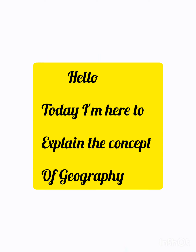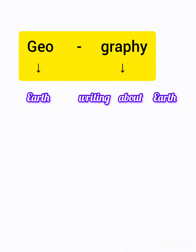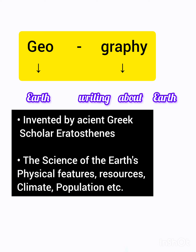Hello, today I'm here to explain the concept of geography. Geography is the combination of two Greek words: 'Geo' and 'graphy.' Geo means earth, and graphy means description or writing about earth. The word geography was invented by the ancient Greek scholar Eratosthenes.